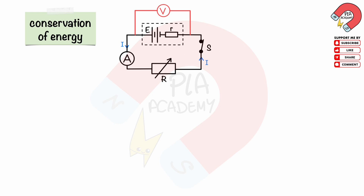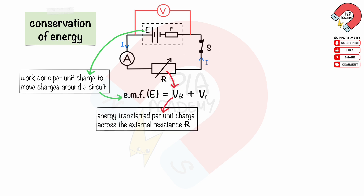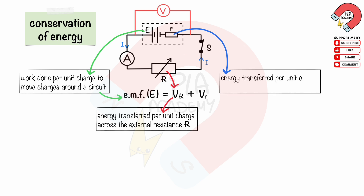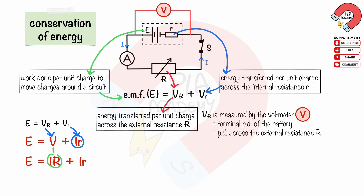According to the conservation of energy, we can write the equation as: EMF E equals PD across the external resistance plus PD across the internal resistance. The EMF E of a battery represents the work done per unit charge to move charges around a circuit. This work done equals the sum of the energy transferred per unit charge across the external resistance — which is the voltage across R — and the energy transferred per unit charge across the internal resistance. Substituting: voltage across R equals V, and voltage across the internal resistance equals I times r.